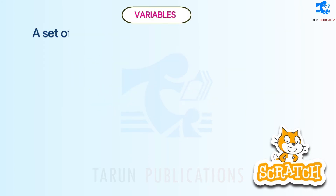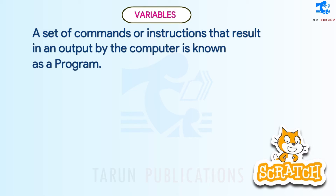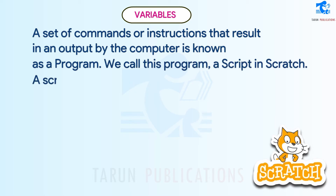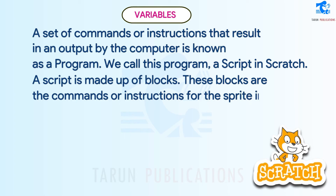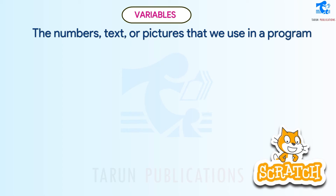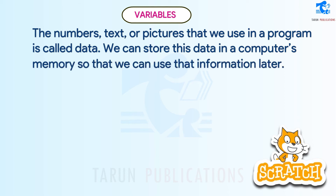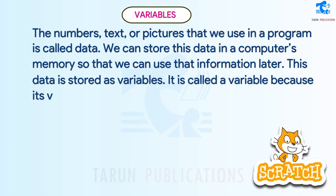A set of commands or instructions that result in an output by the computer is known as a program. We call this program a script in Scratch, and a script is made up of blocks. The numbers, text, or pictures we use in a program are called data. We can store this data in a computer's memory to use later, and this data is stored as variables.